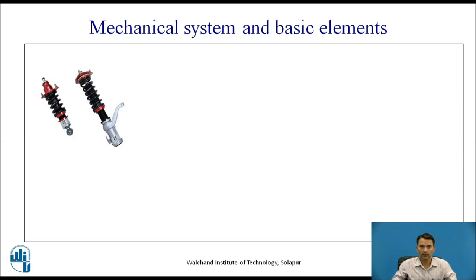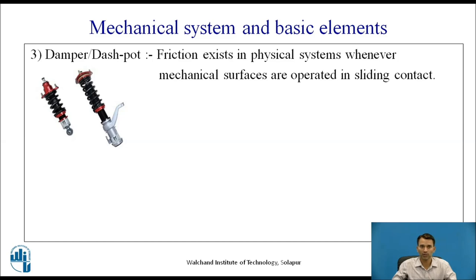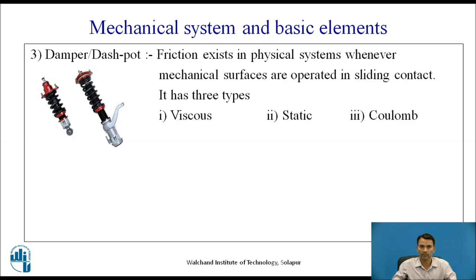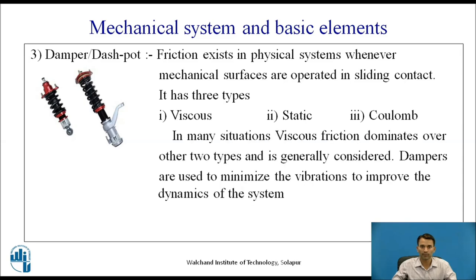The third element is the dashpot, shown here as a shock absorber, which is nothing but a damper or dashpot. Friction exists in physical systems whenever mechanical surfaces operate in sliding contact. It has three types: viscous, static, and coulomb. In many situations, viscous friction dominates over the other two types, and viscous is generally considered. Dampers are used to minimize vibrations and improve the dynamics of the system. In mathematical modeling, the damper is represented by its symbol.